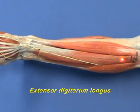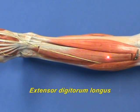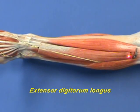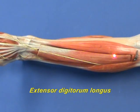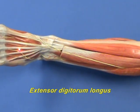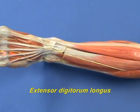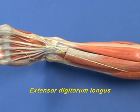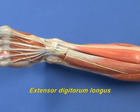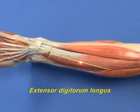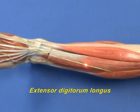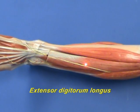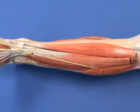The extensor digitorum longus muscle has an origin on the proximal half of the fibula and the lateral tibial condyle. It inserts by way of these four tendons onto the bases of the middle and distal phalanges of the four lateral toes. The extensor digitorum longus extends the four lateral toes and dorsiflexes the foot.